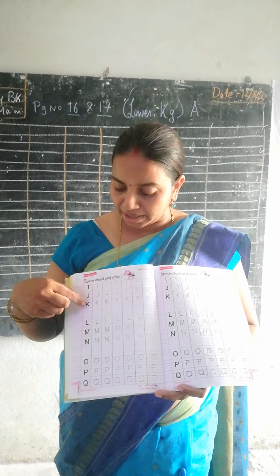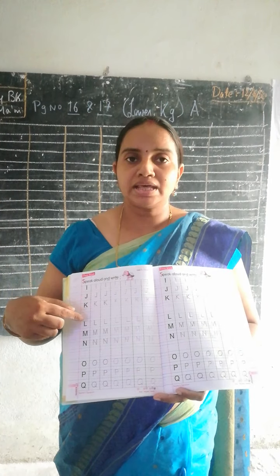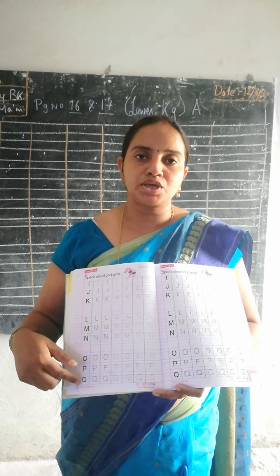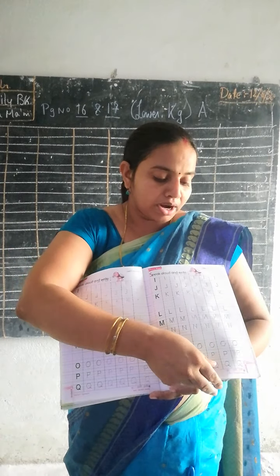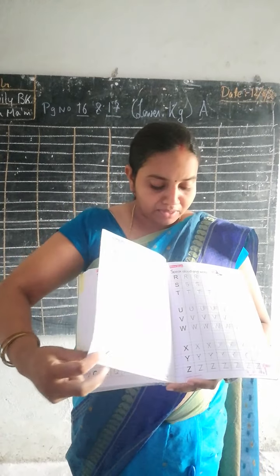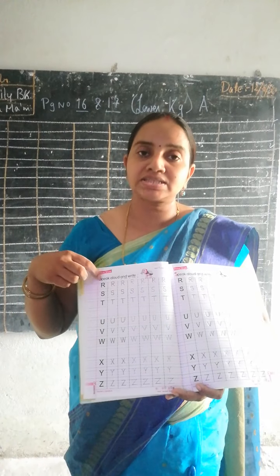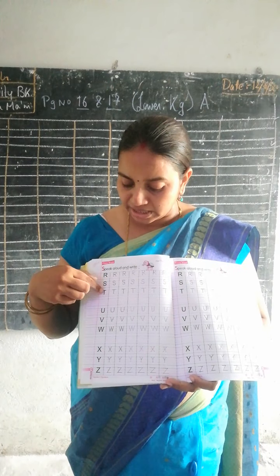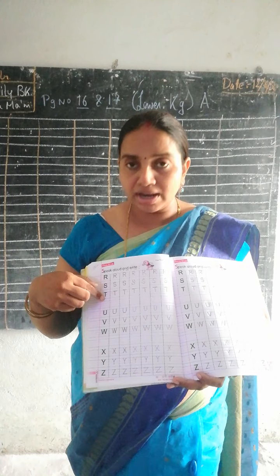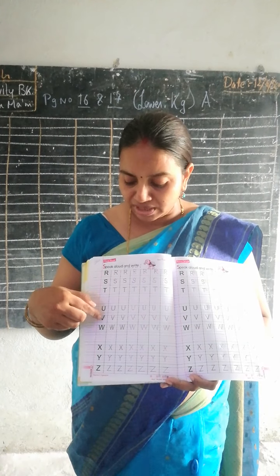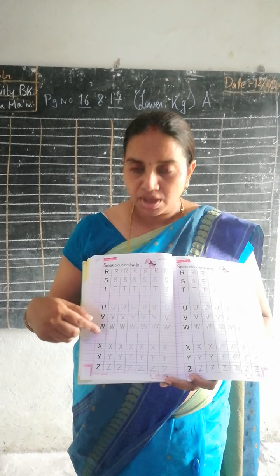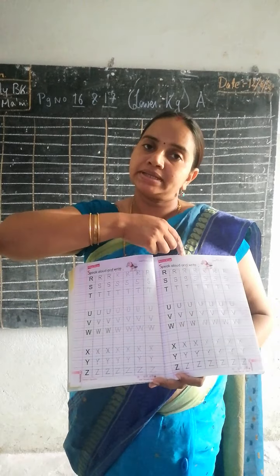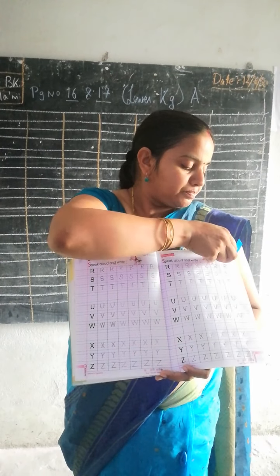Then we came to the next set of letters: I, J, K, L, M, N, O, P, Q — always written in your four-line format. Then we moved to R, S, T — leaving one line — then U, V, W, and then X, Y, Z. We completed all of these.